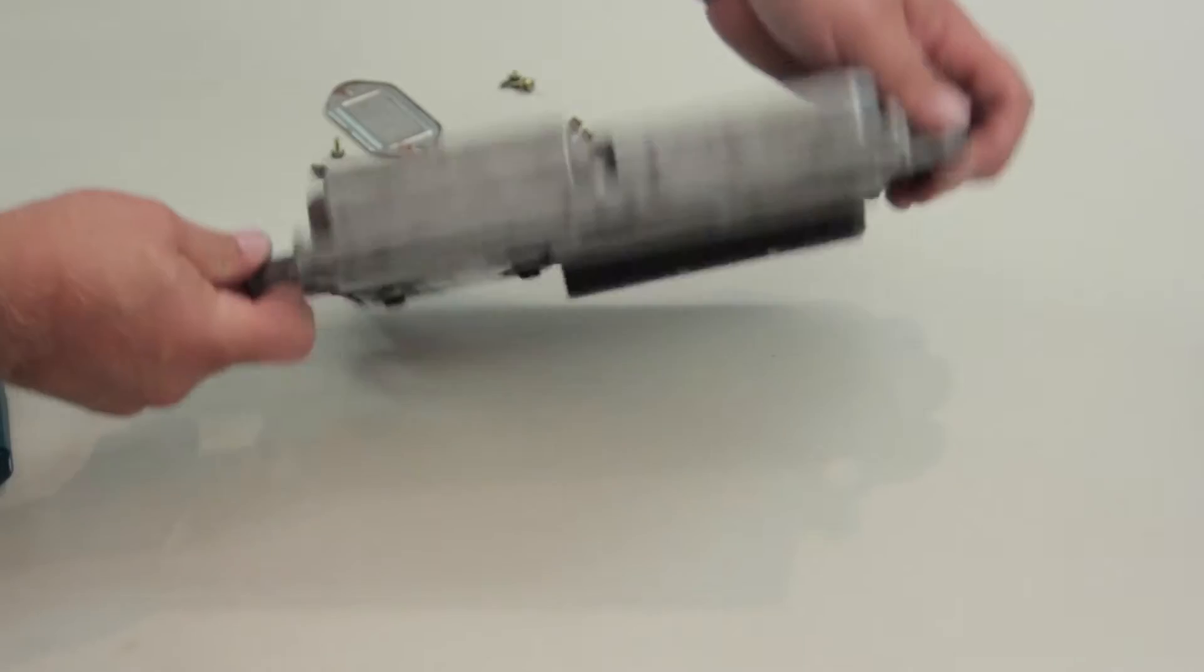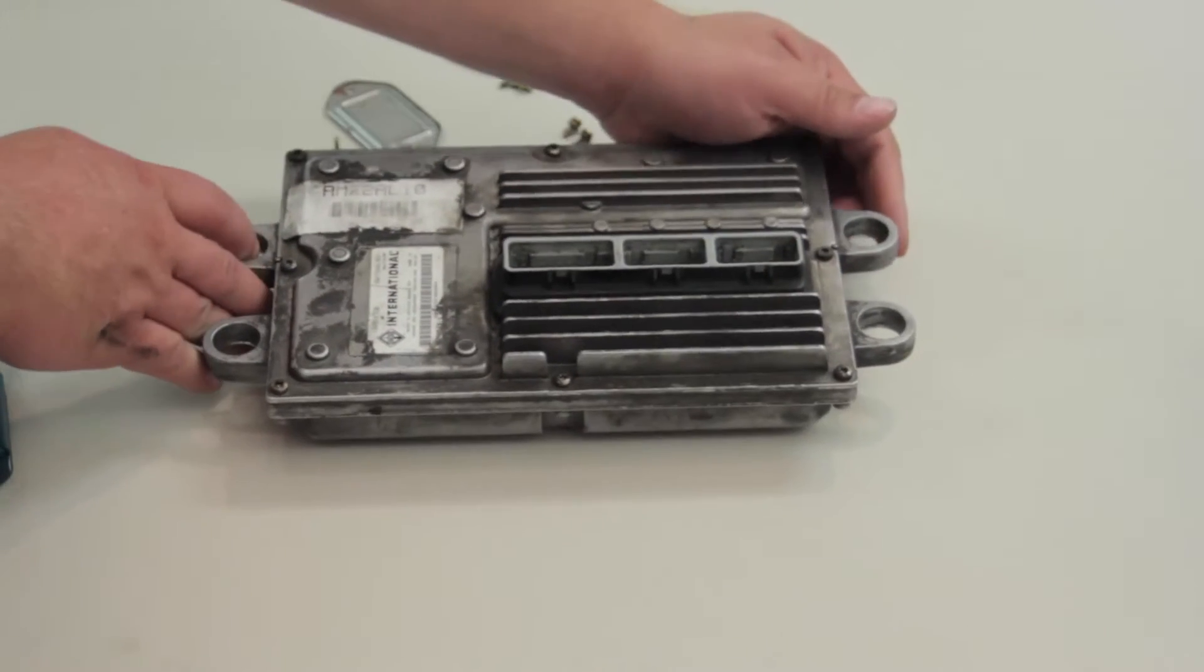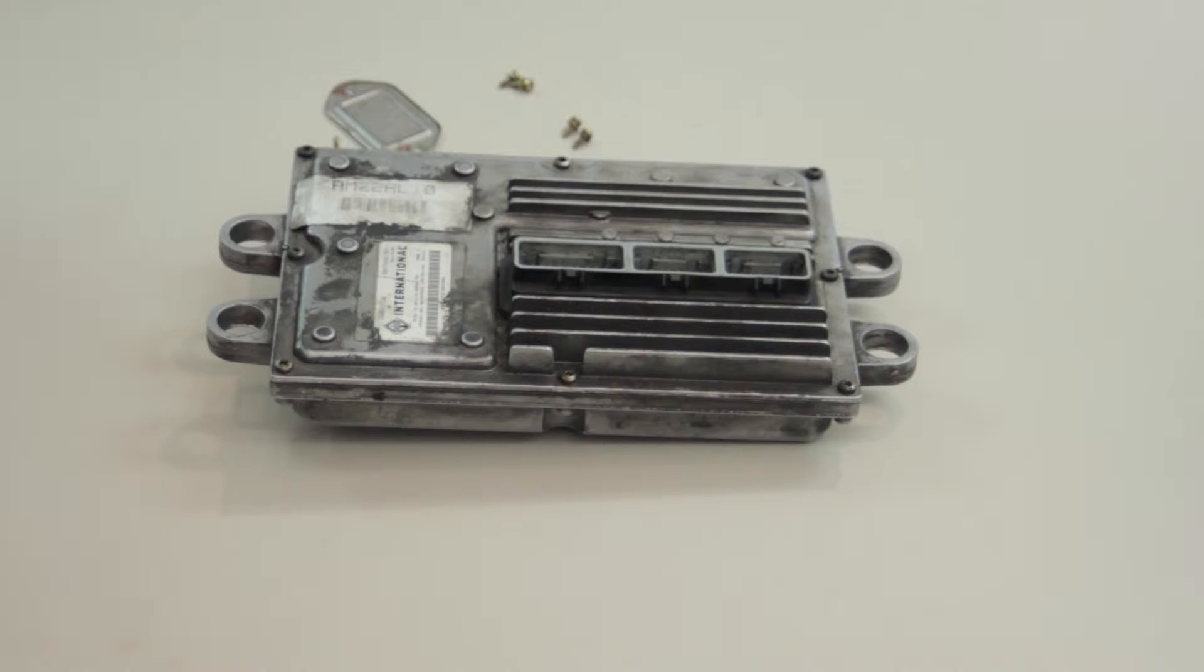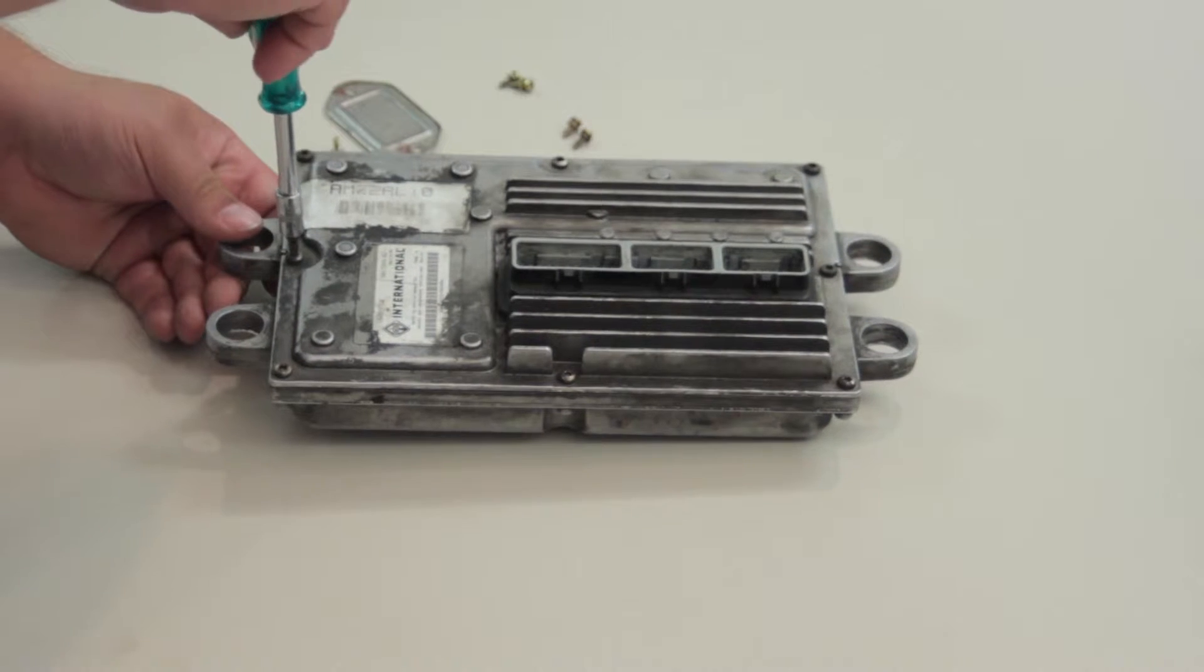Once the four of these are done, now we can flip it over and we've got several of them holding the two halves together. So again I'm going to take my T20 and remove all of these.